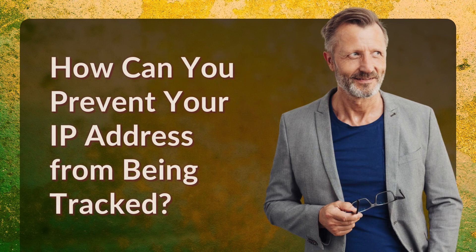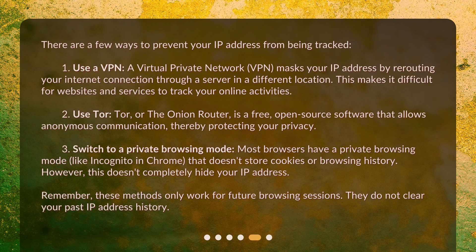How can you prevent your IP address from being tracked? There are a few ways. First, use a VPN. A virtual private network, VPN, masks your IP address by rerouting your Internet connection through a server in a different location, making it difficult for websites and services to track your online activities. Second, use Tor — the Onion Router — a free, open-source software that allows anonymous communication, thereby protecting your privacy.